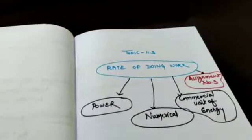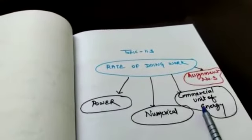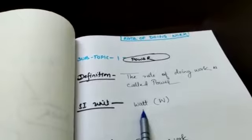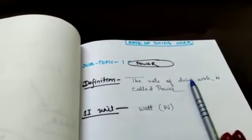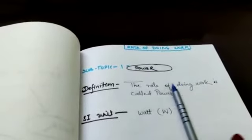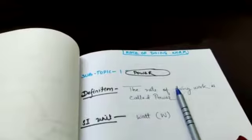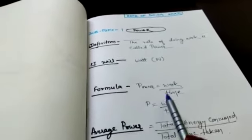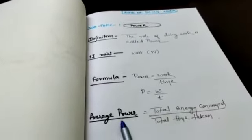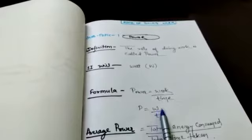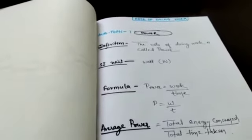Then next we have topic 11.3, rate of doing work. Here we have power, then numerical, then commercial unit of energy and at the end we have assignment number third. So here power. The rate of doing work is called power. How much work is done in one second? This is known as power. And SI unit is watt. Then here power is work upon time. Work is W and time is T. Average power is total energy consumed upon total time taken. Work is also energy. The capacity of doing work is energy. So total energy upon total time taken. This is average power.